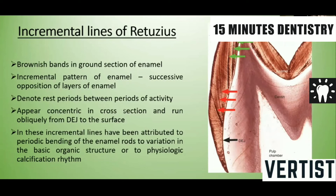The incremental lines of Retzius are brownish bands in the ground section of the enamel, as indicated by the arrows in the picture. They indicate the successive apposition of layers of enamel and denote the rest periods between periods of activity. In cross-section they appear concentric, and they run obliquely from the dentino-enamel junction to the surface. These incremental lines have been attributed to the periodic bending of enamel rods, to variation in the basic organic structure, or to the physiologic calcification rhythm.